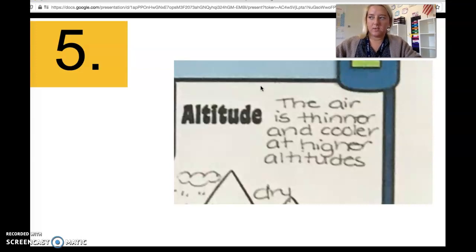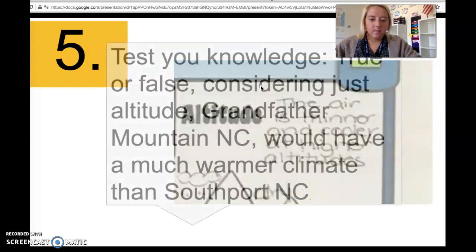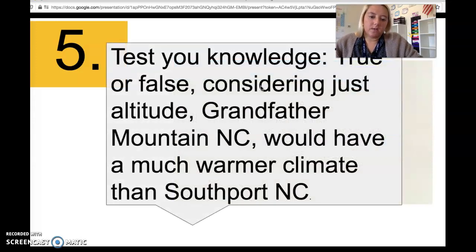Test your knowledge: true or false, considering the altitude, Grandfather Mountain, North Carolina, would have a much warmer climate than Southport, North Carolina. So a mountain in North Carolina—would it have a warmer or colder climate than a coastal town in North Carolina? It would actually have a much cooler climate because it is higher above sea level than the sea or coastal town.